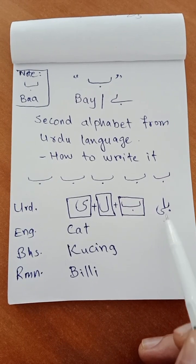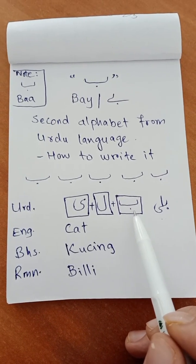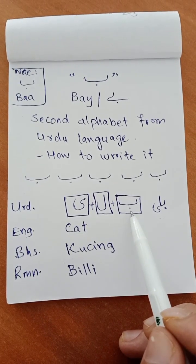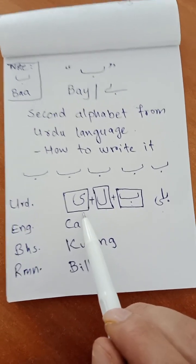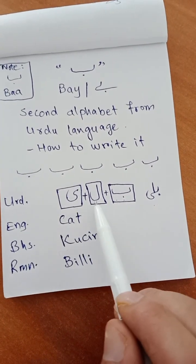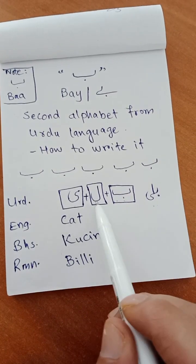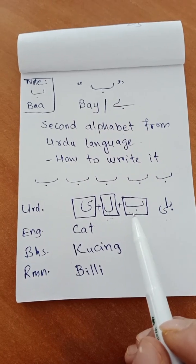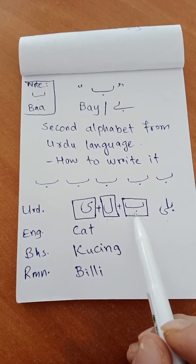I separated Billi into three parts — three alphabets are used: Bay, Laam, Chotiye. We call it Chotiye. These are the upcoming alphabets. So we are targeting first Bay. Yesterday we discussed about Alif — Alif Anhar. Today we will discuss about Bay.